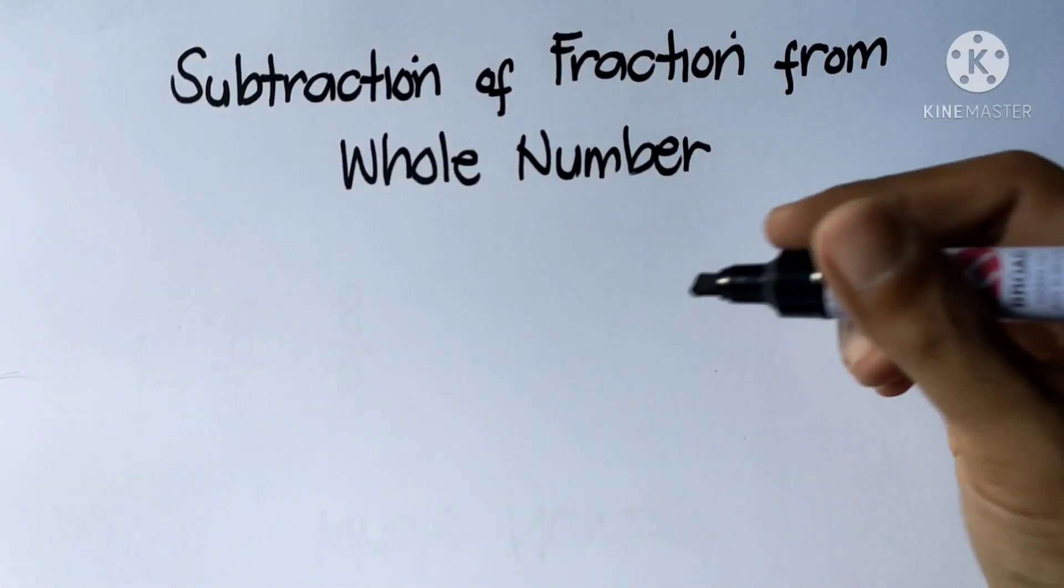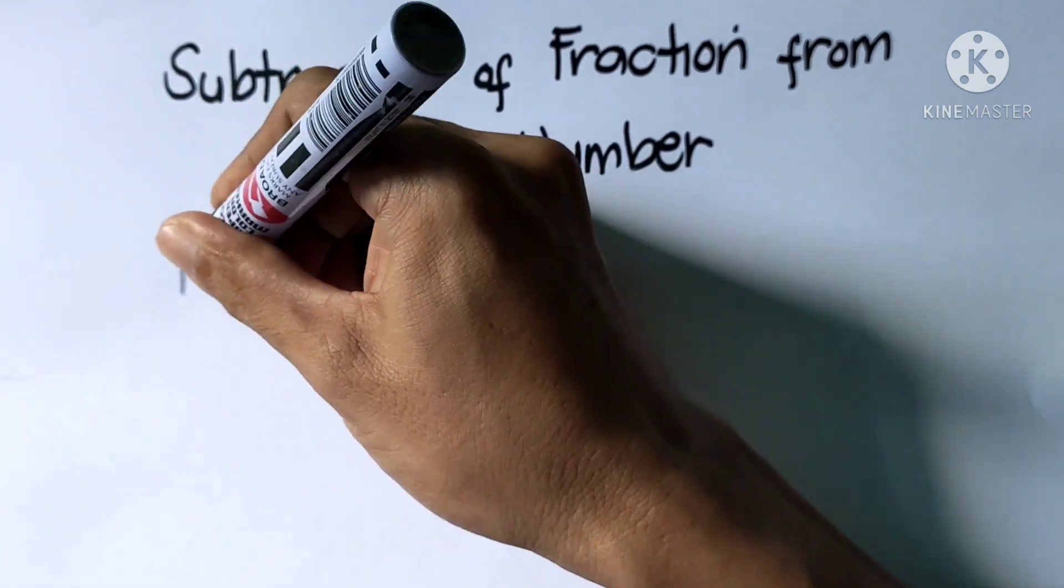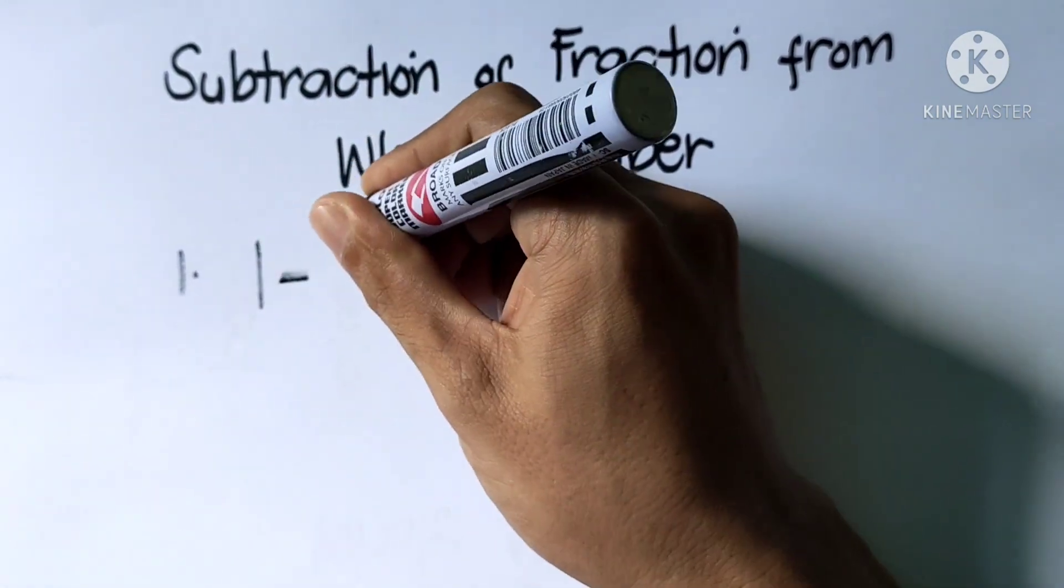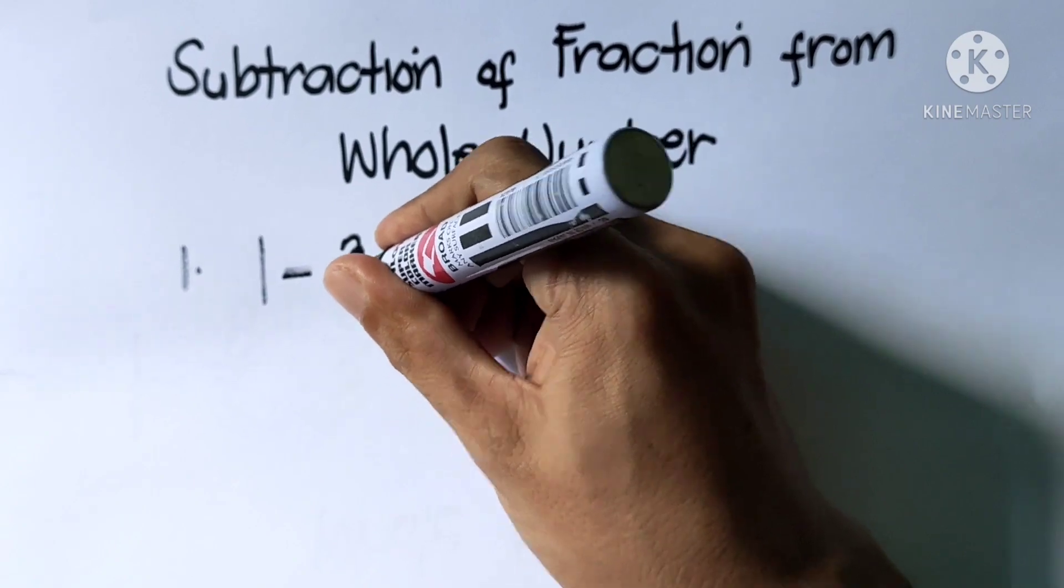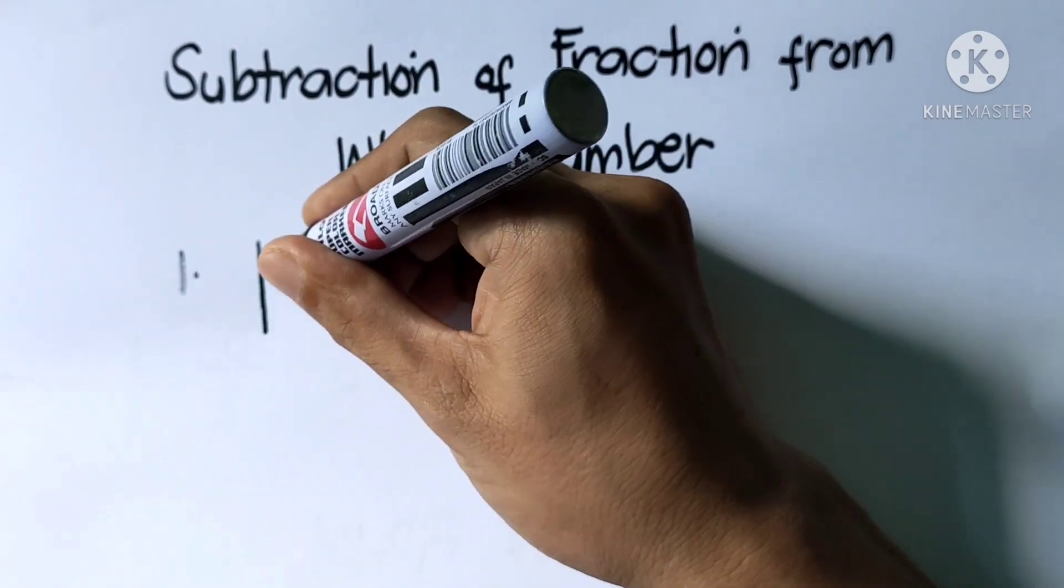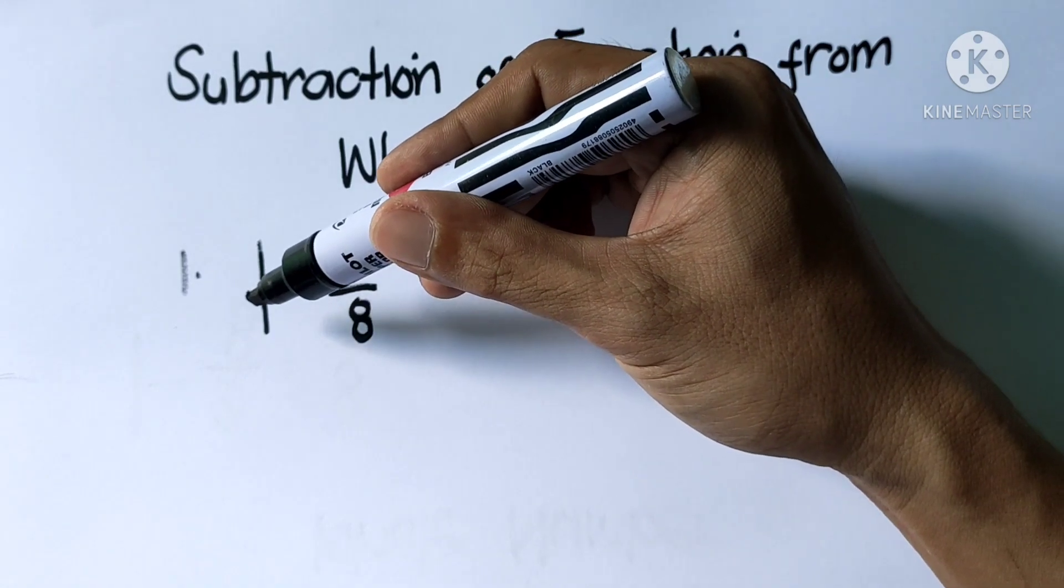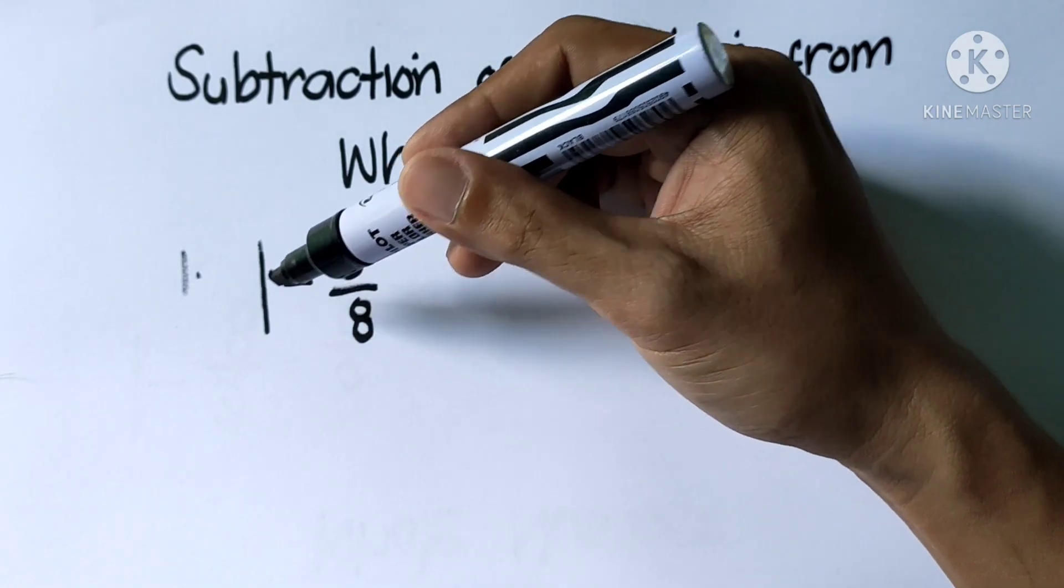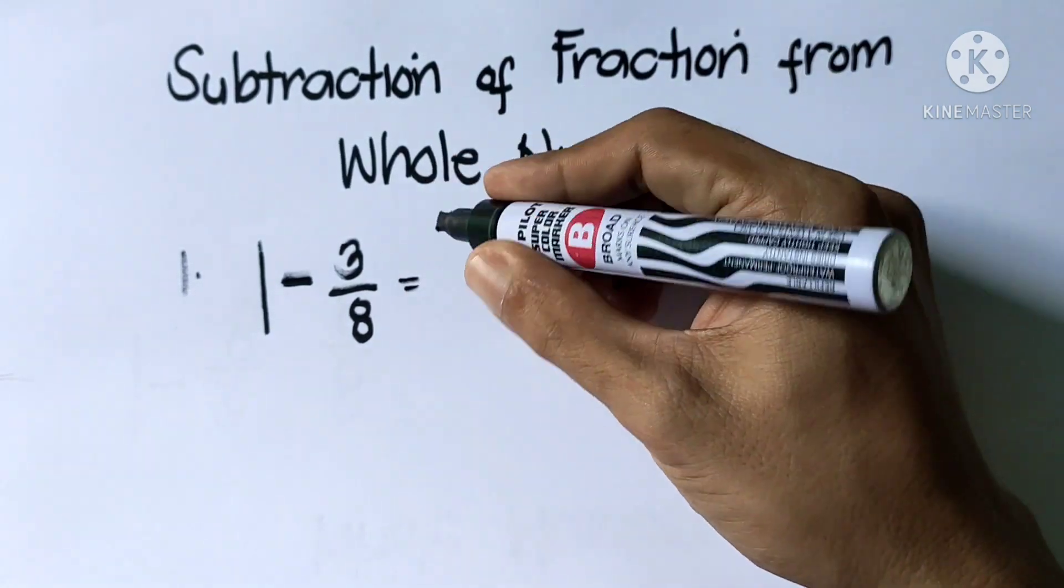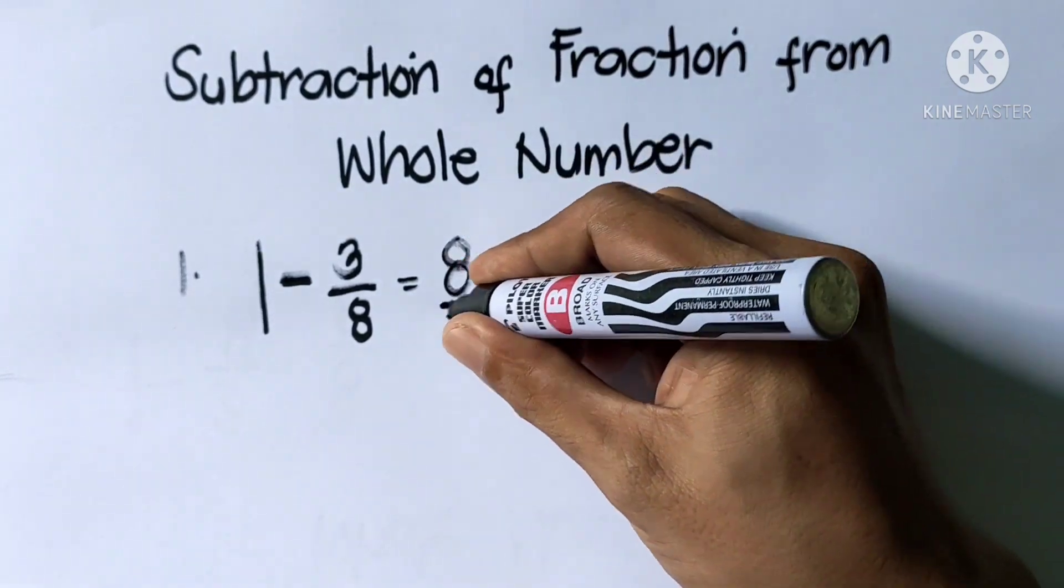Example number 1: 1 minus 3 over 8. First step, we need to change this whole number into a fraction. So 1 becomes 8 over 8.